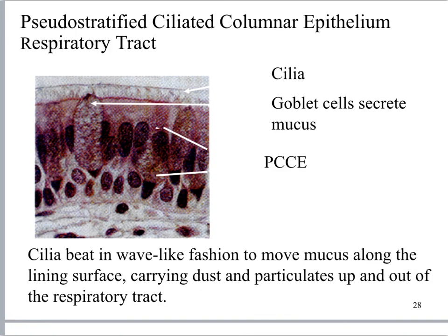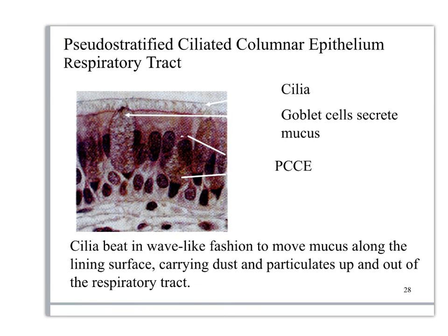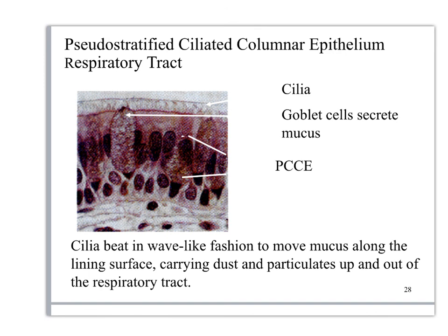If there is no cilia, we call it pseudostratified columnar epithelium or PCE. If cilia are present, we call it pseudostratified ciliated columnar epithelium, PCCE. Looking at the photomicrograph, you can see the basement membrane, the nuclei are all jumbled, and cilia are visible up top. Another image from the trachea shows hyaline cartilage below and pseudostratified columnar epithelium above — nuclei are jumbled, big goblet cells are visible, and there are cilia.